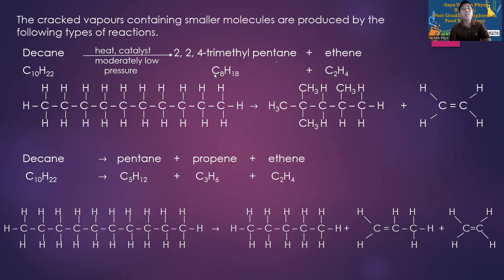After the branching, the branching here is the 2,4-trimethyl. You can see the branching here, and then here will be the carbon chain.